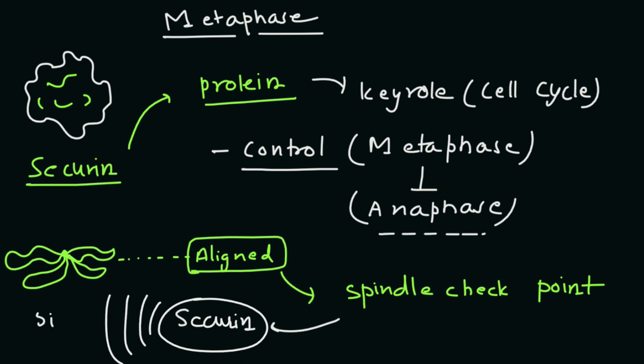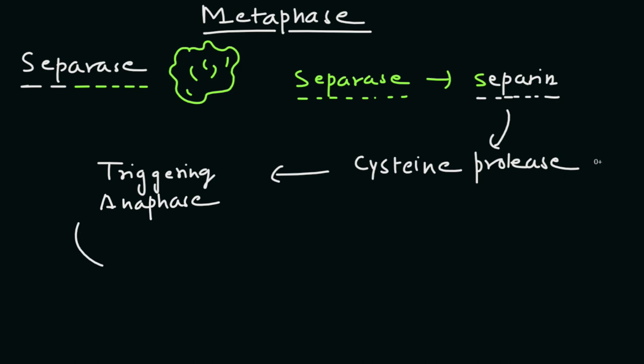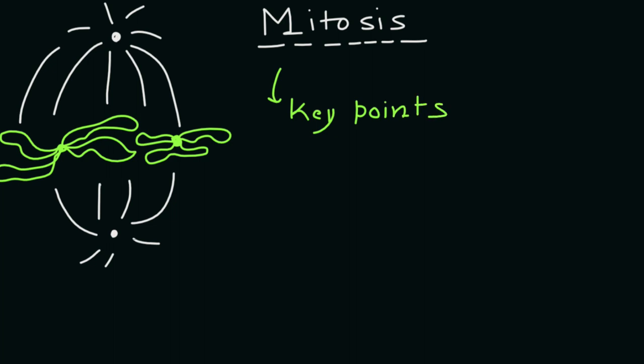Separase, also known as separin, is a cysteine protease responsible for triggering anaphase by hydrolyzing cohesins, the protein responsible for binding sister chromatids during the early stage of anaphase. These were some of the key points of metaphase stage. Next we will discuss the anaphase stage of mitosis.